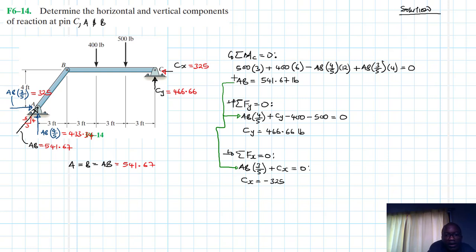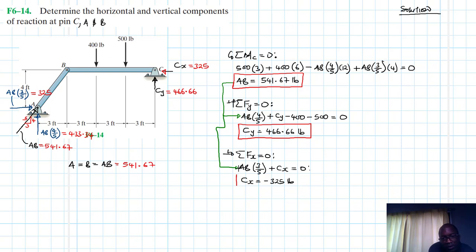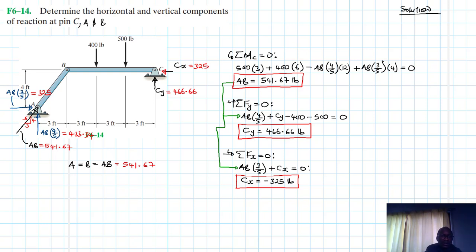So the final solutions are: AB as the two-force member in compression equals 541.67 pounds, CY equals 466.66 pounds, and CX equals 325 pounds. This is really about it for the solution.